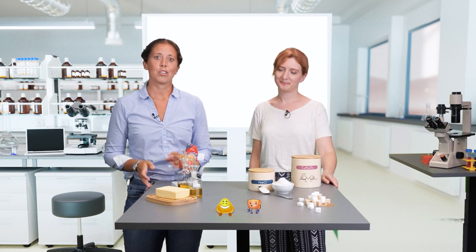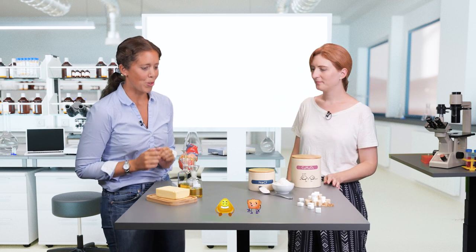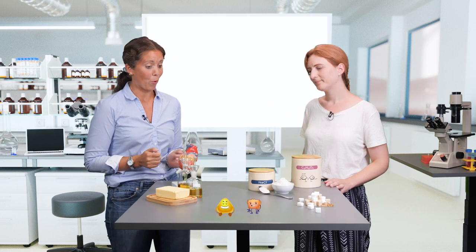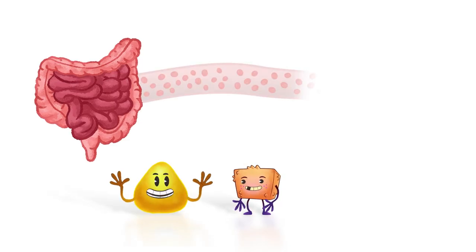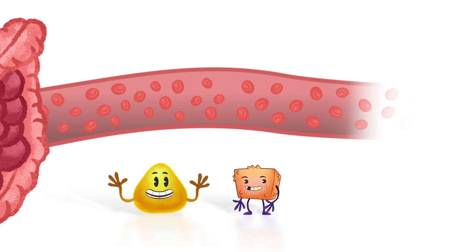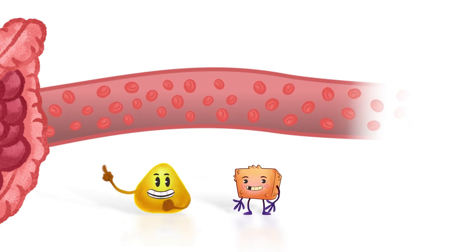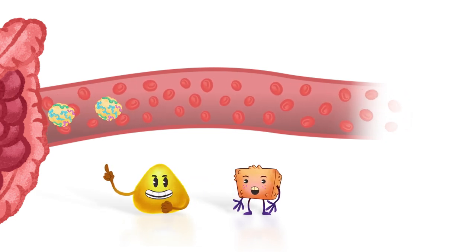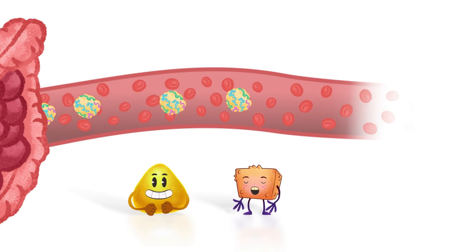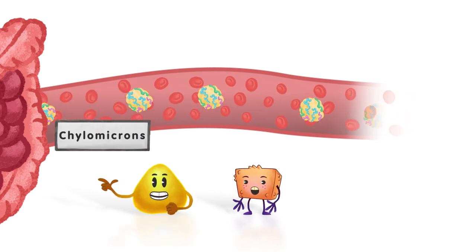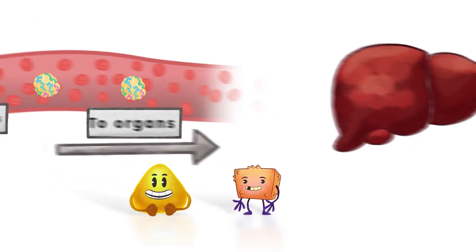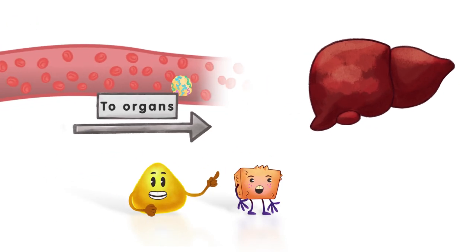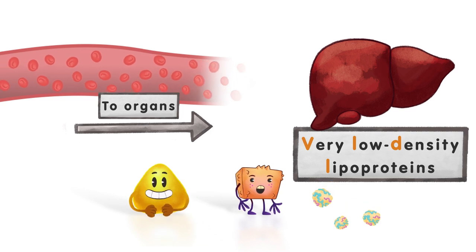The liver is of course also involved in lipid metabolism for the whole body. Lipids cannot travel in the bloodstream alone — they require a transportation device. In this case, these are the lipoproteins. The first that appear in the circulation are called chylomicrons and are produced by cells of the intestine, the enterocytes.